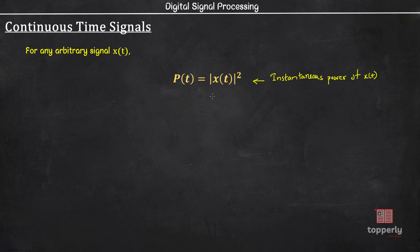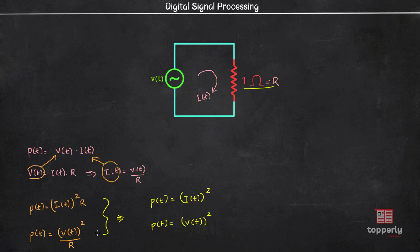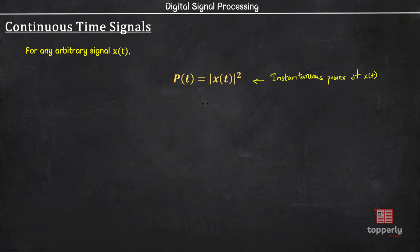So in signal analysis, it is customary to assume a 1 ohm resistor, so regardless of whether X(t) represents a voltage across it or a current through it, we may express the instantaneous power P(t) associated with the signal X(t) as magnitude of X(t) squared. Now we know that power is the rate at which energy is supplied or consumed.